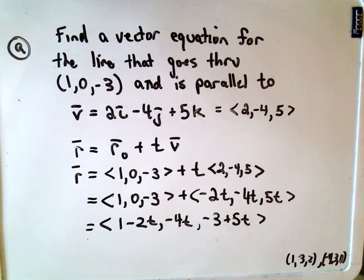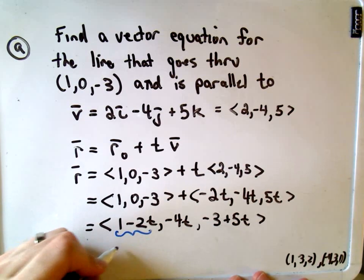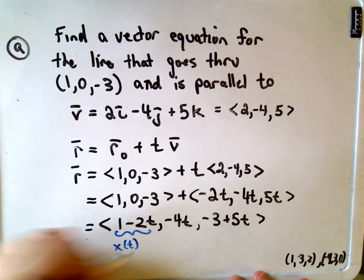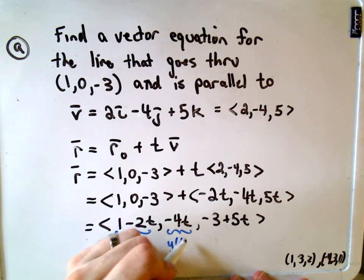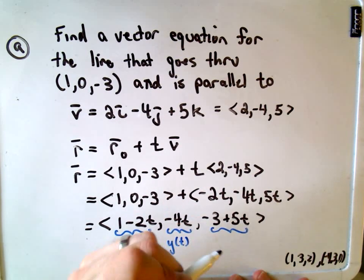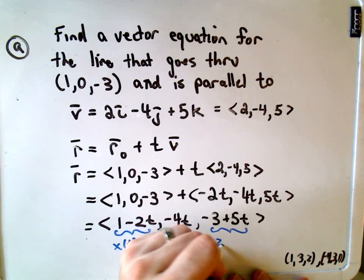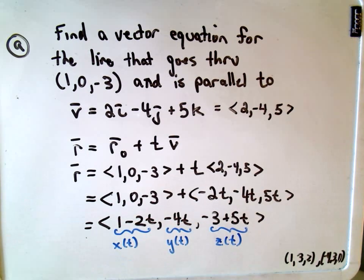You could even specify—sometimes they'll ask about the parametric equations for the line. So the 1 - 2t would be the parametric form for the x coordinate, -4t would be the parametric form for the y coordinate, and -3 + 5t would be the parametric form for the z coordinate. Just in case somebody asks that or you see that in a problem. No big deal.